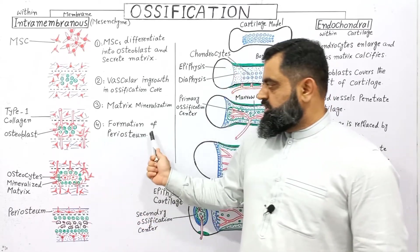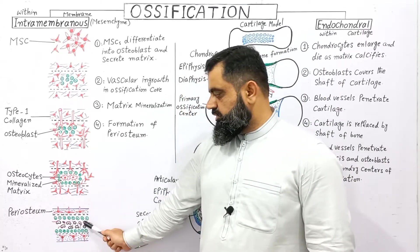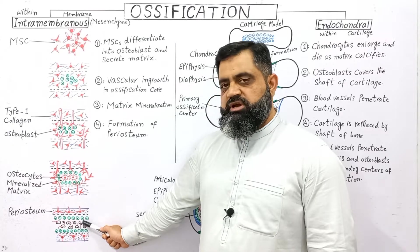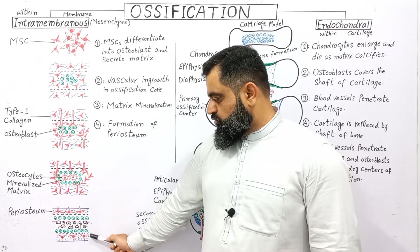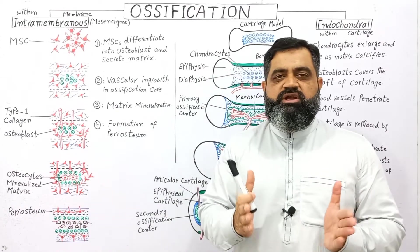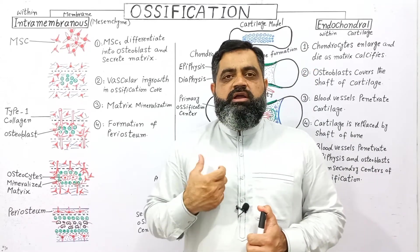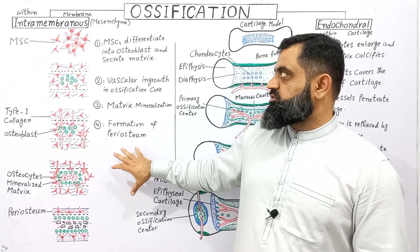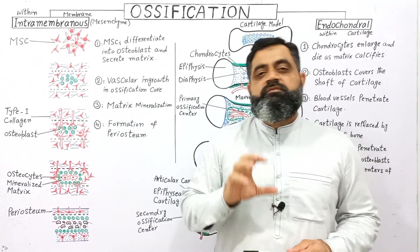Formation of periosteum is the last step. As you can see in the diagram, the central part has become spongy bone, osteoblasts are converting into osteocytes, and on both margins of the bone there is a periosteum — the outer protective compact bone layer. In this way, clavicle, facial, and skull bones are formed during intramembranous ossification.